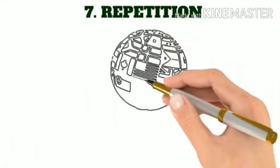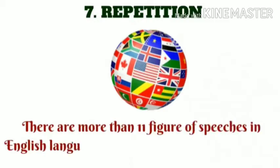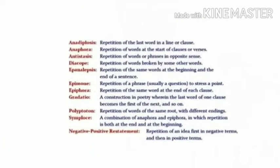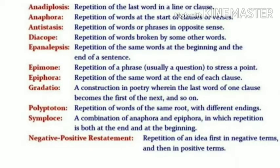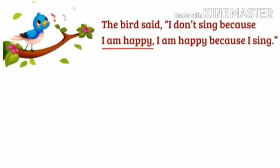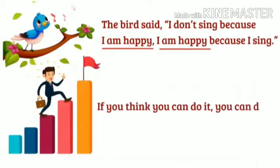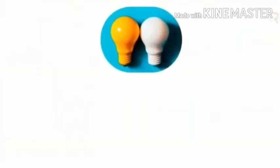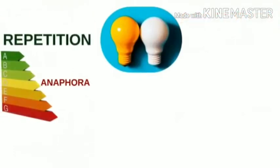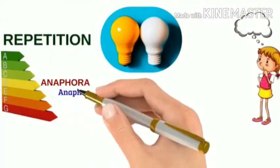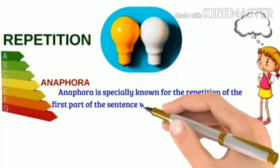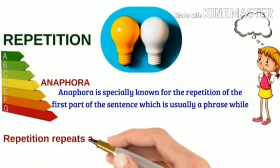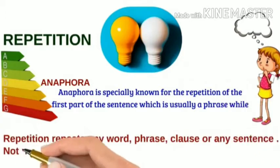Repetition. It's a very wide term. There are more than 11 figures of speech in the English language in which only repetition is done. If we talk about the difference between anaphora and repetition, we can say that anaphora is only a part of repetition. Anaphora is specially known for the repetition of the first part of the sentence, which is usually a phrase, while repetition repeats any word, phrase, clause, or any part of the sentence — not necessarily the first one.